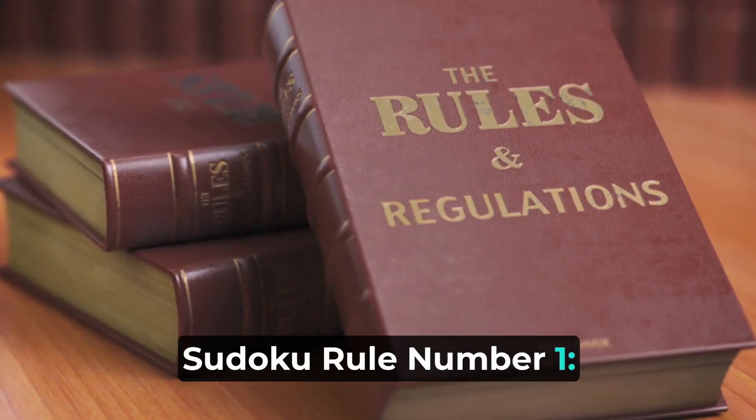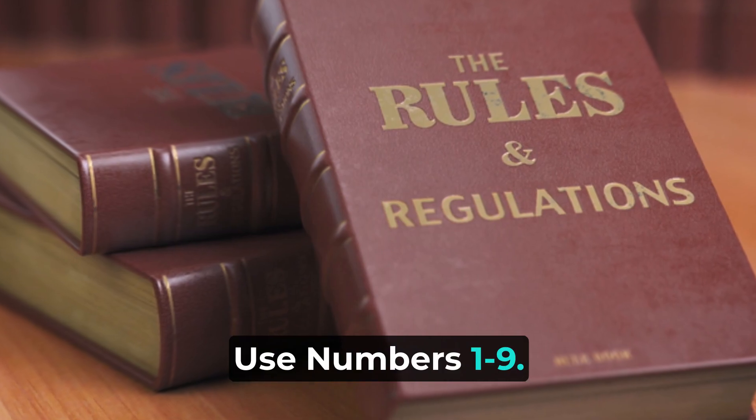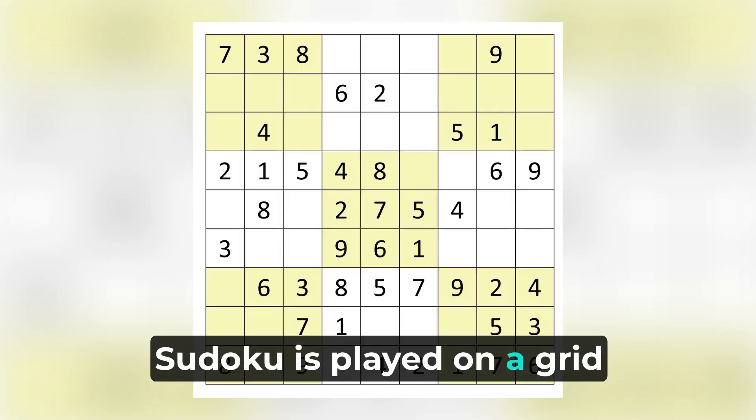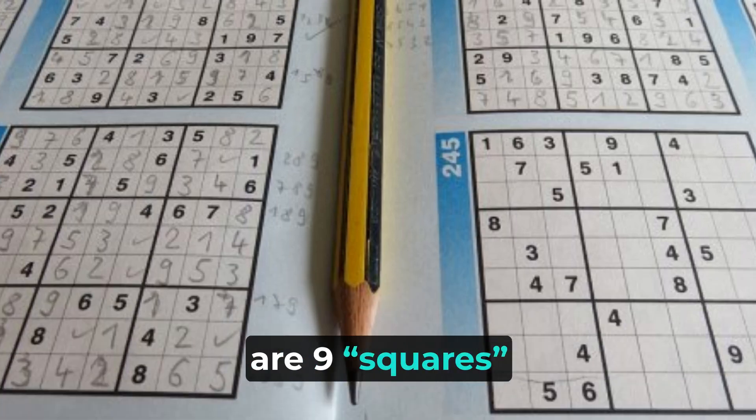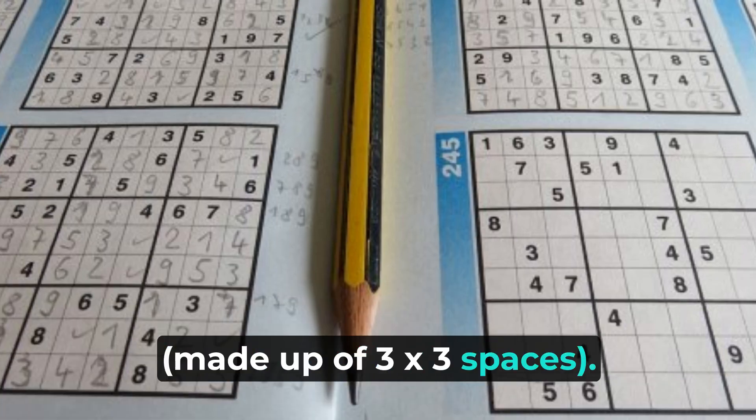Sudoku rule number one: use numbers one to nine. Sudoku is played on a grid of nine by nine spaces. Within the rows and columns are nine squares, made up of three by three spaces.